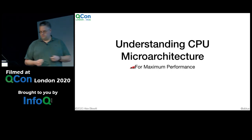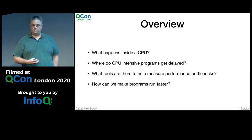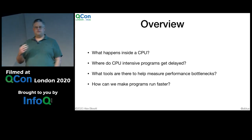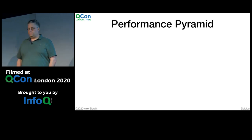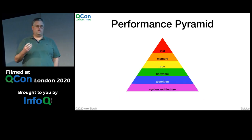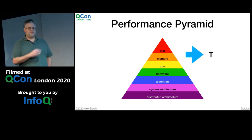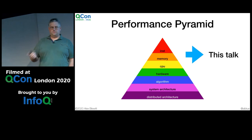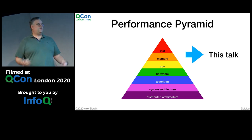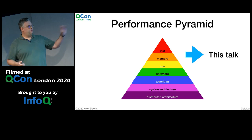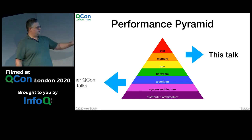This is the talk on understanding CPU microarchitecture for maximum performance. We're going to talk about what happens inside a CPU, how it hooks into the rest of the system, how the memory subsystem and caching work, and the tools available for analysis. We're focusing on the performance pyramid: instructions, memory, and the CPU. Note: fix your distributed system, architecture, and algorithms first — the CPU-level work is the last couple of percent. Other Qcon talks are available.